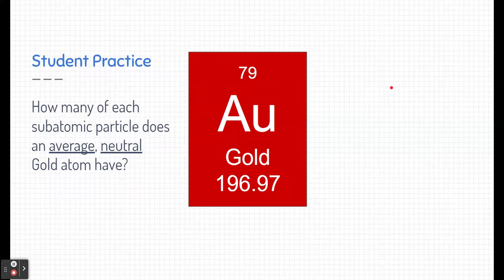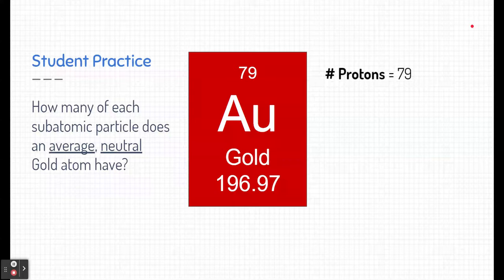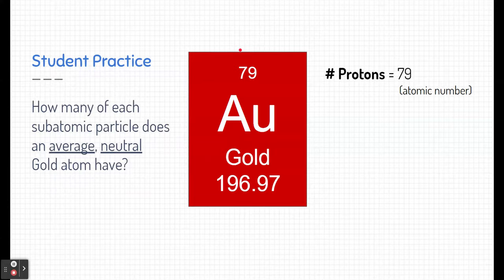Did you try it yourself? I sure hope so. Based on the periodic table and the things we see, there are 79 protons. That's pretty easy because the atomic number is the number of protons for every atom, and that never changes.